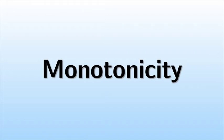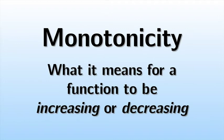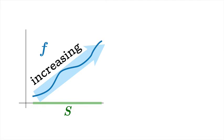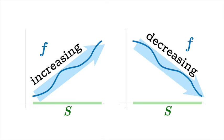Today we're going to talk about monotonicity, or what it means for a function to be increasing or decreasing. Suppose we have some function f, and we're thinking about its values on some set of arguments s, and we notice that the graph basically moves up as we move from left to right within s. We might want to say that this graph is increasing — it seems to be a pretty good description of what's happening. And of course we'd have a mirror image definition for decreasing if the graph was falling as you moved from left to right. This video is going to be all about putting details into these ideas.